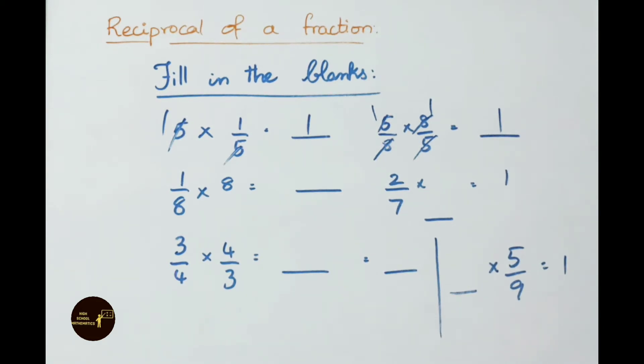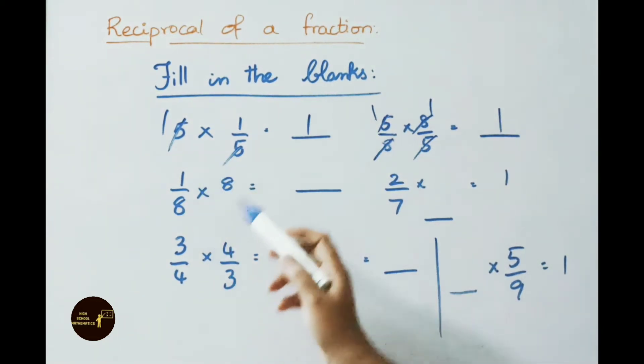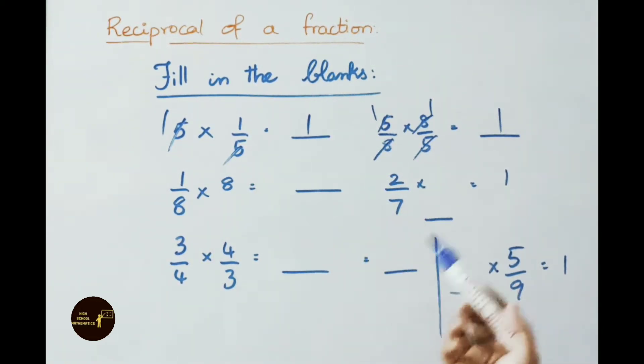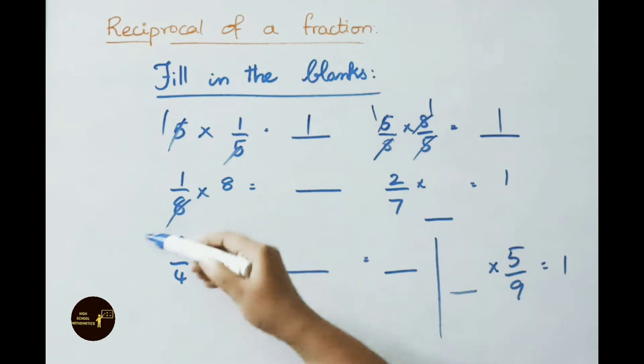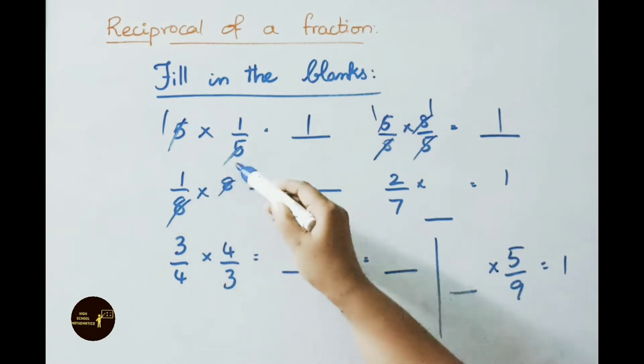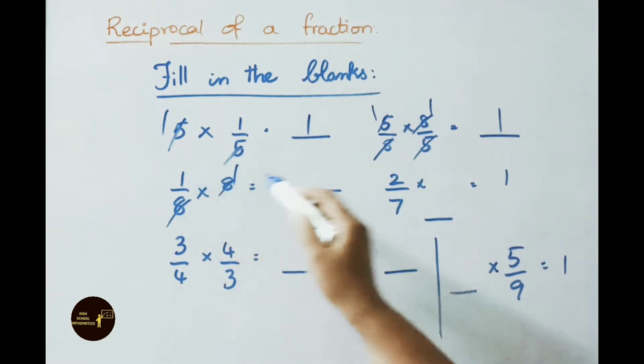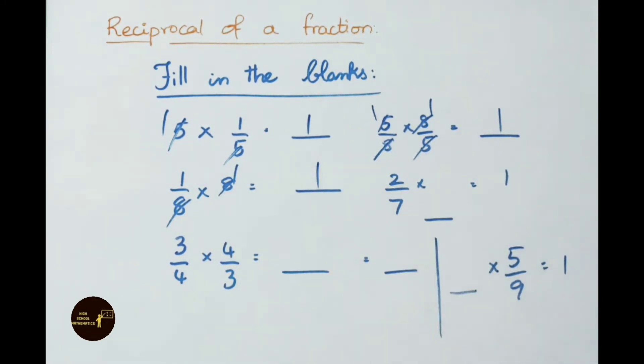See the next one: 1/8 reciprocally is 8/1, that is 8. Here 8 and 8 cancel one time. So 1 × 1 = 1. The answer is 1.